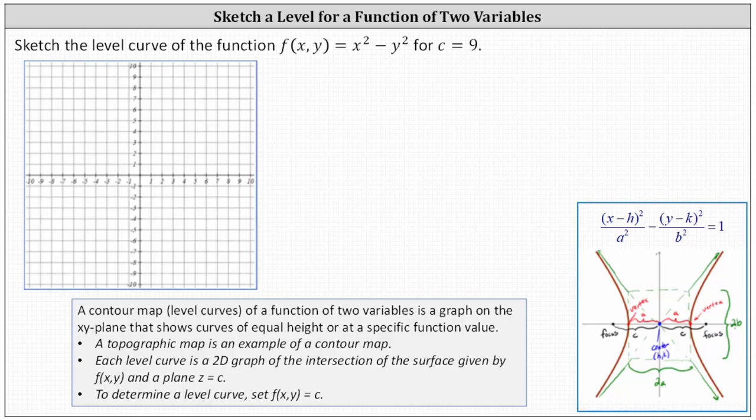Sketch the level curve of the function f of x comma y equals x squared minus y squared for c equals nine.